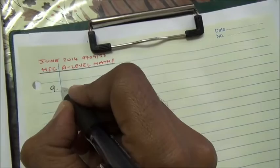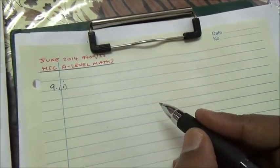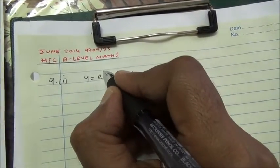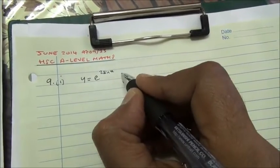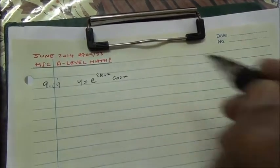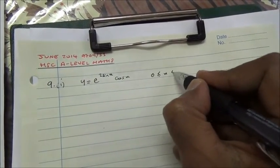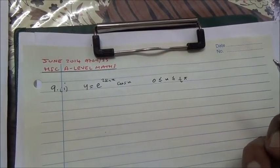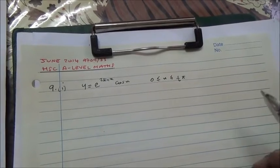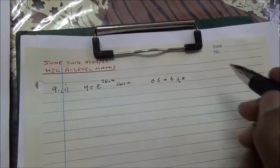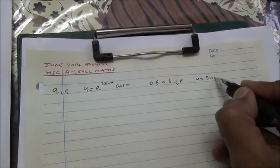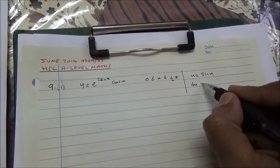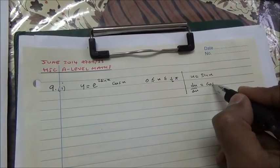For the first part of question 9, the equation of the curve is y = e to the 2 sin x times cos x, for 0 ≤ x ≤ π/2. To find the area using substitution, we let u = sin x. Differentiating, du/dx = cos x.